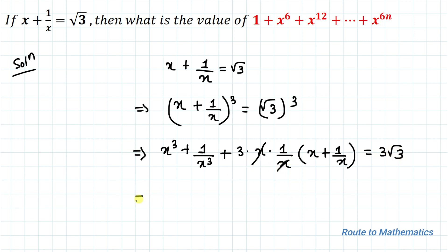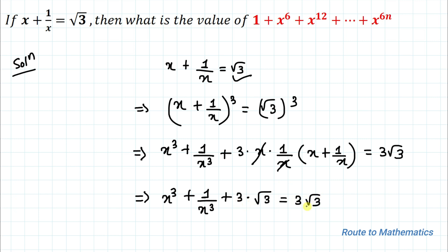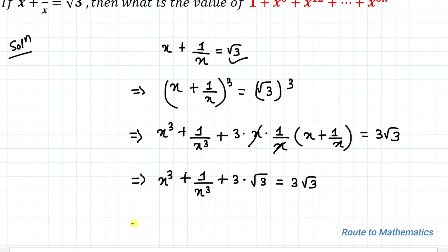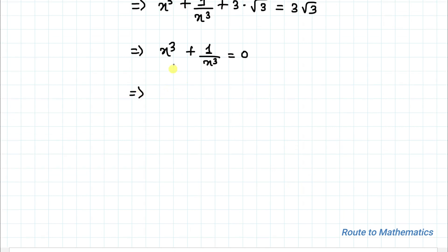Here x and x get cancelled out. So we have x cube plus 1 by x cube plus 3 multiplied with x plus 1 by x equals to root 3, which gives 3 root 3. Taking 3 root 3 to the right hand side gives 0, so x cube plus 1 by x cube equals to 0. Taking LCM, we get x to the power 6 plus 1 equals to 0, which implies x to the power 6 equals to minus 1. Let's take this as equation 1.